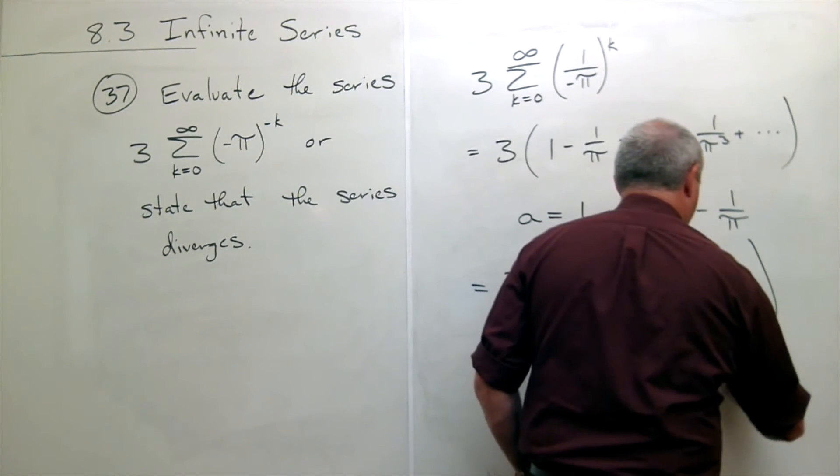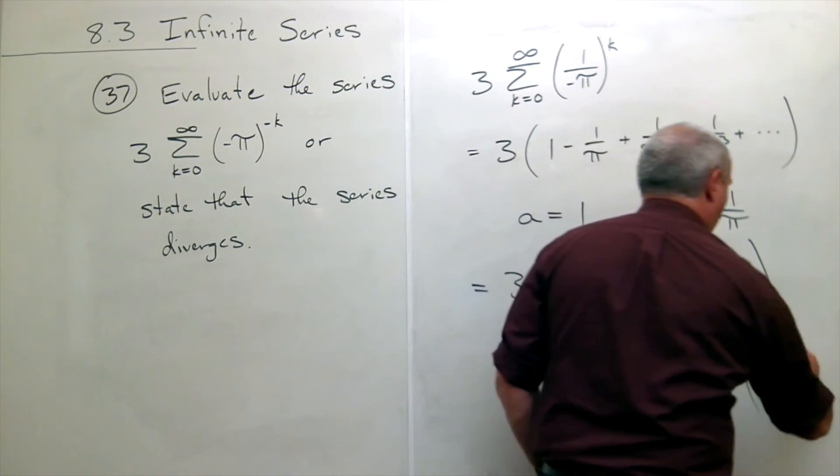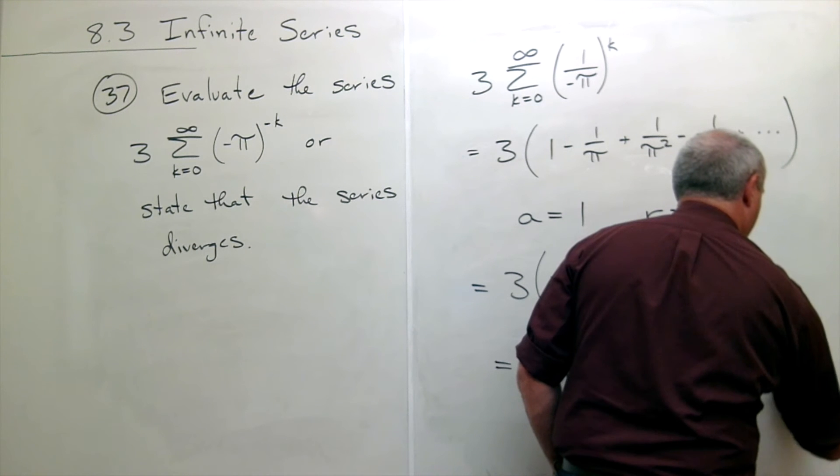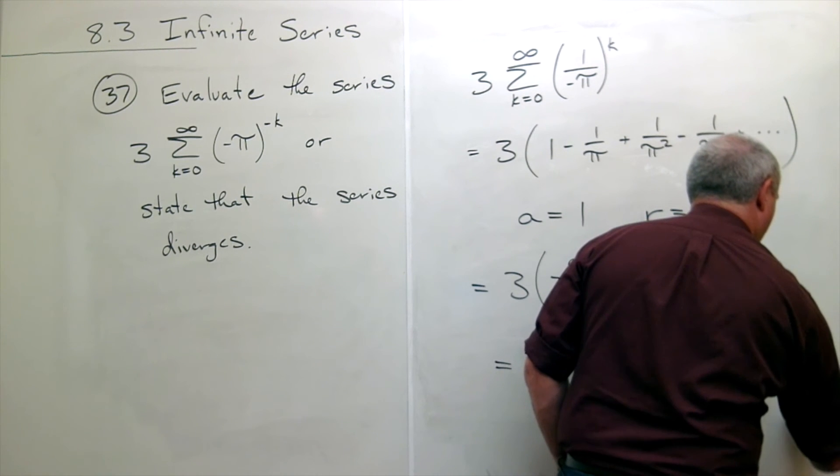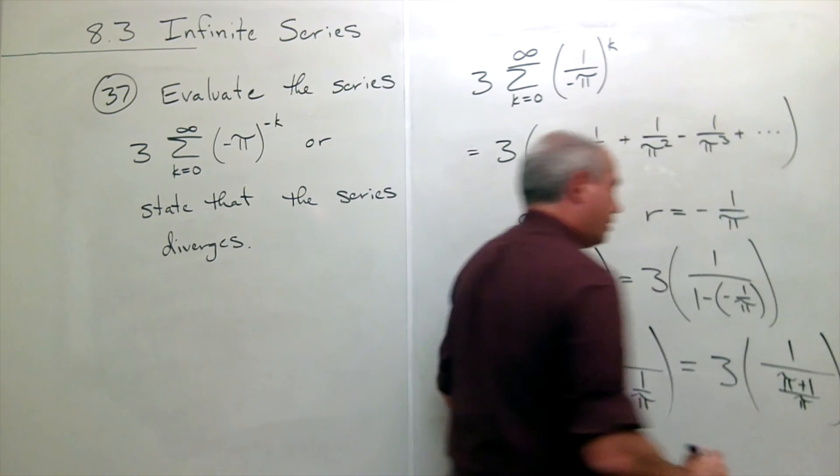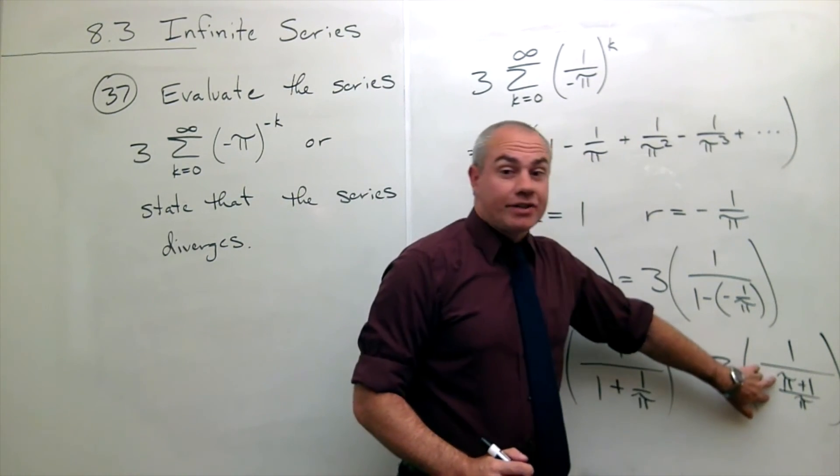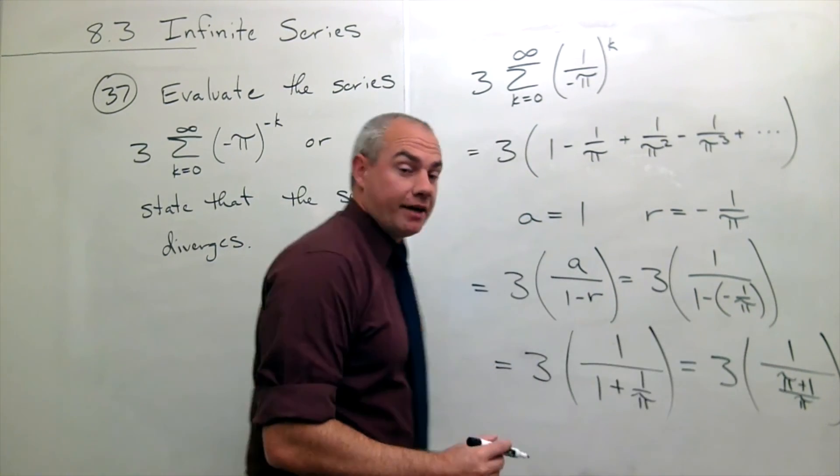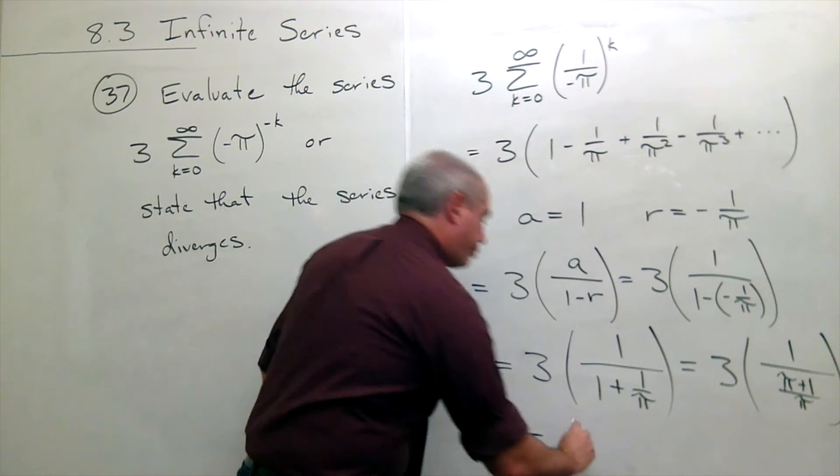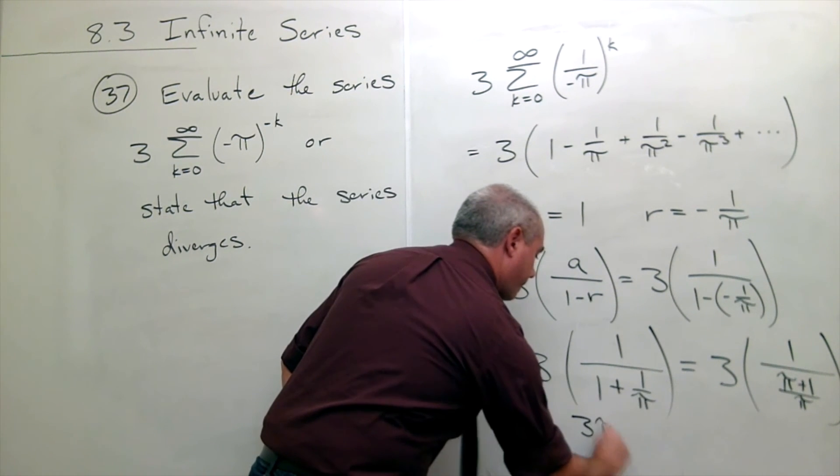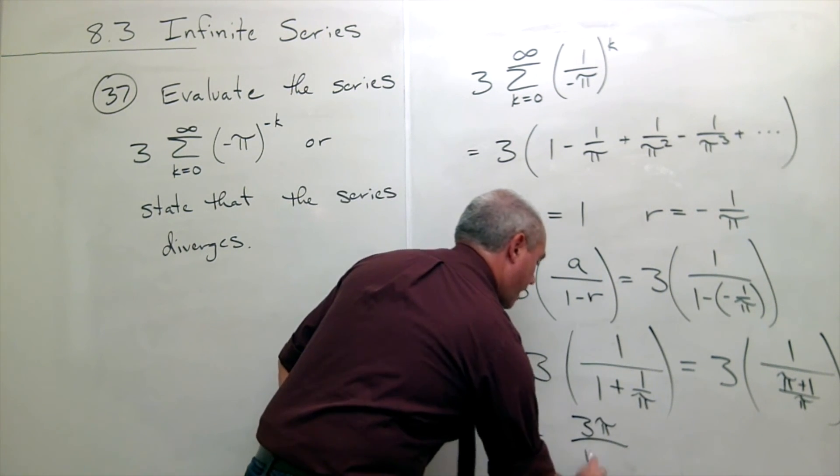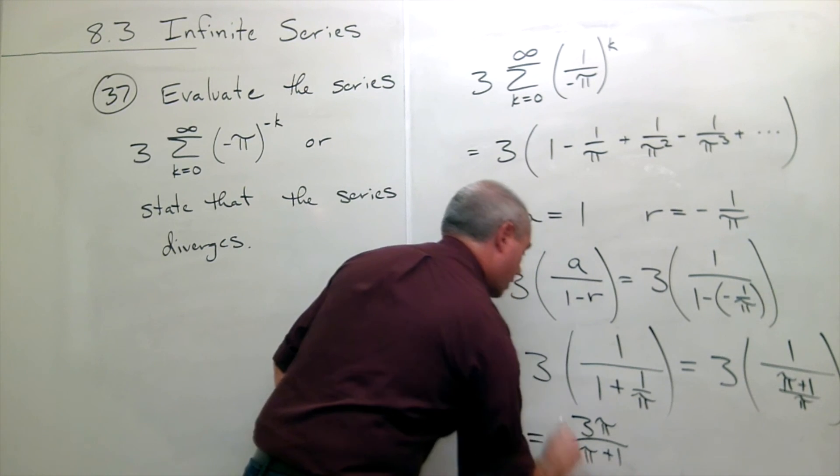So this is 3 times 1 over π plus 1 over π. So I could take that fraction, flip and multiply, and what I'd end up with here is 3π divided by π plus 1.